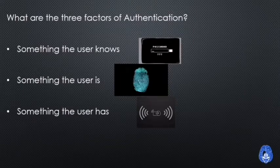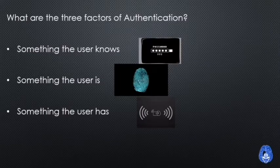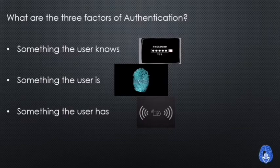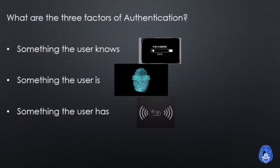The third and last factor is something the user has — a physical item the user possesses to authenticate and get access to data. For example, an RFID card, which looks like an ATM card and needs to be scanned to gain access. These are commonly used in corporate companies and organizations so that users can scan their ID cards to enter a building.